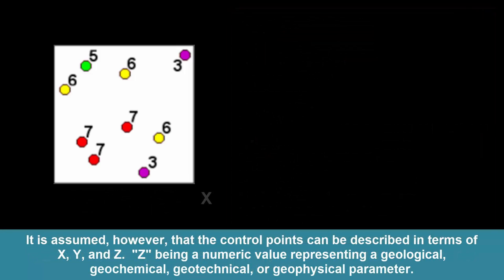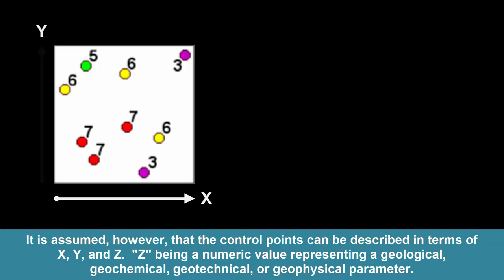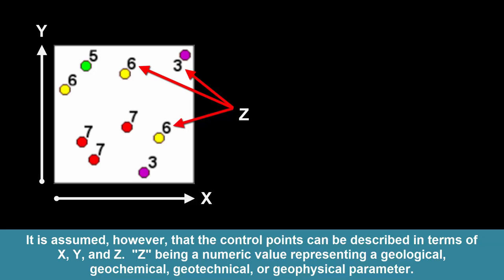It is assumed, however, that the control points can be described in terms of x, y, and z — z being a numeric value representing a geological, geochemical, geotechnical, or geophysical parameter.